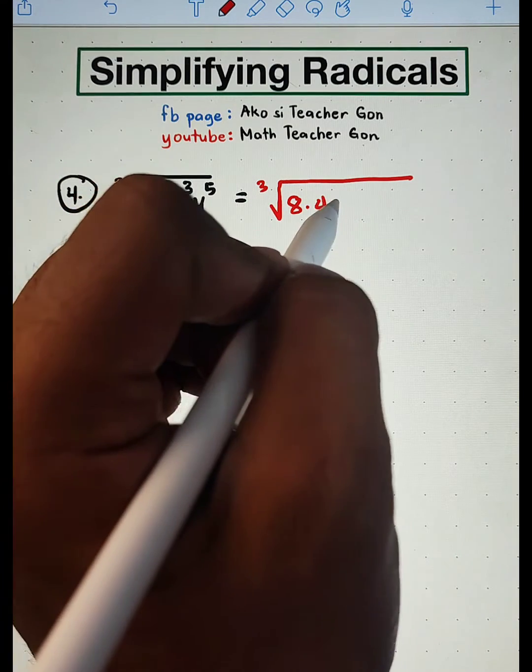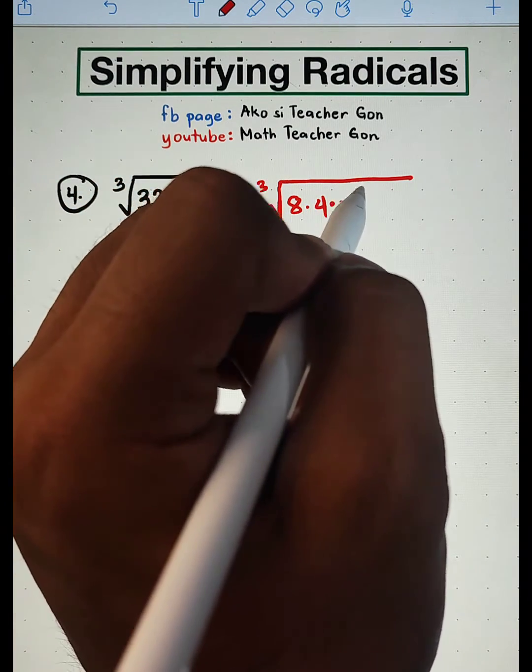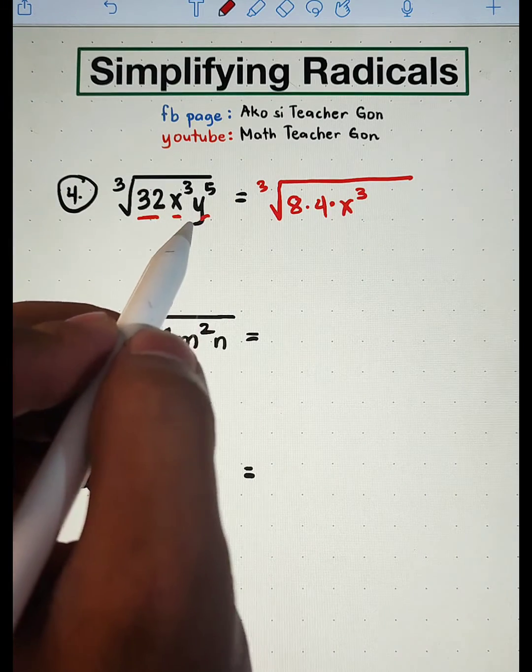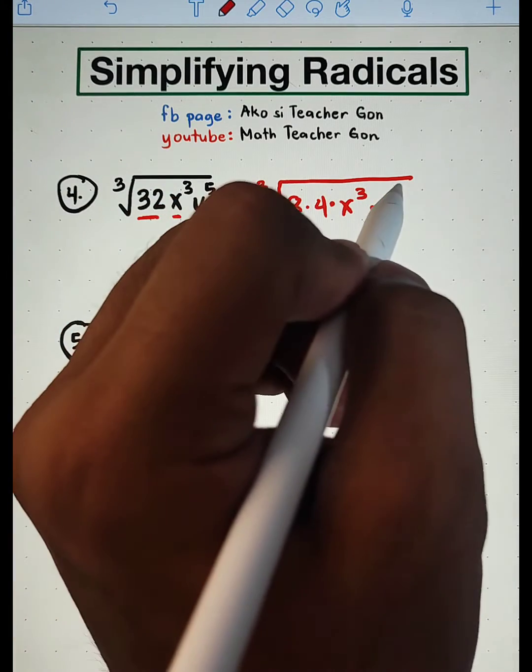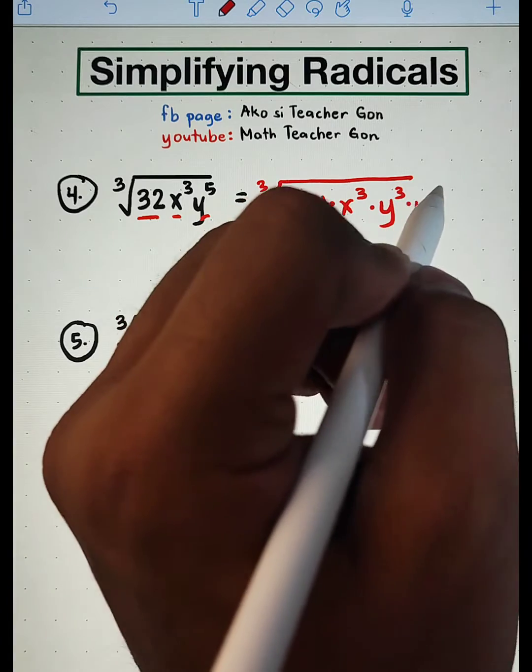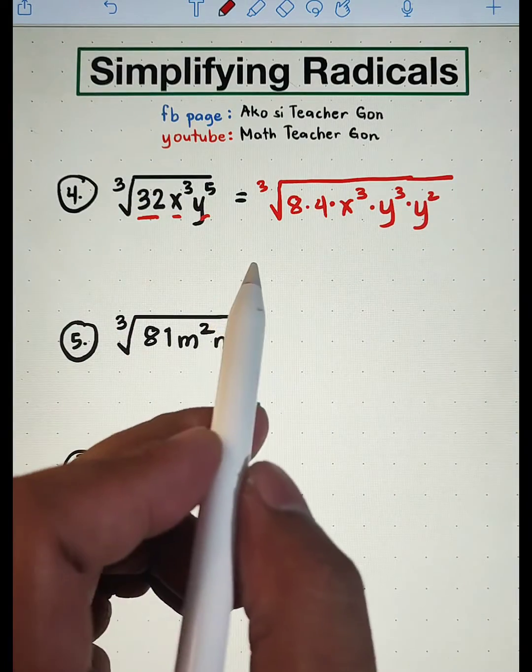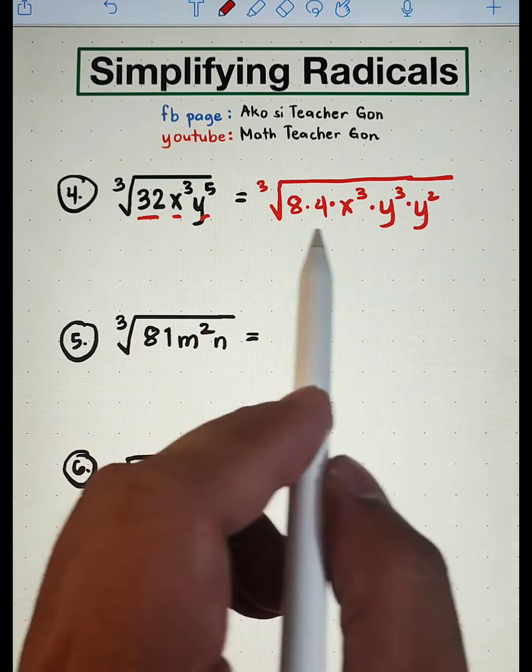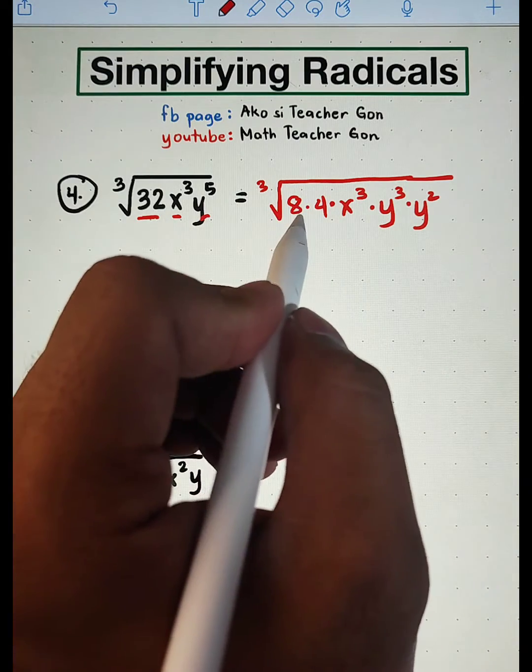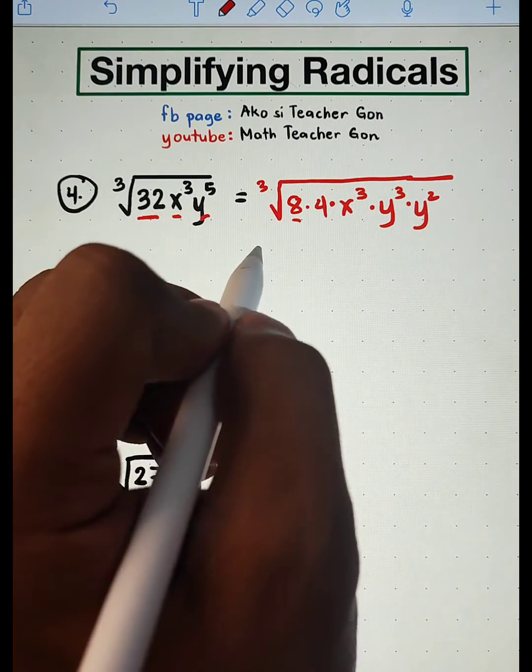For the y variable, that is y cubed times y squared. Now, let us extract the cube root of these expressions. Cube root of 8 is 2. The cube root of x cubed is x. The cube root of y cubed is y.